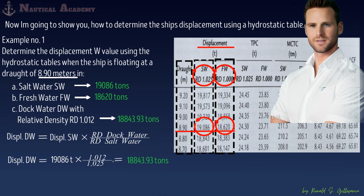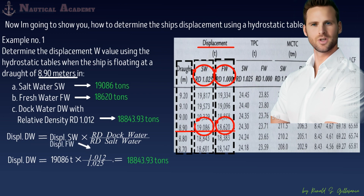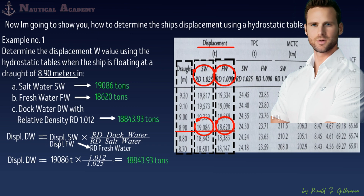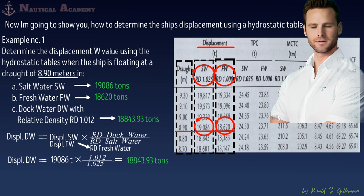Take note that if you use freshwater displacement instead of salt water displacement, your denominator should also be replaced with the relative density of freshwater. Those are all my explanations regarding the first example on how to extract the value of ship's displacement using a hydrostatic table. I hope you got it. I will now proceed to my next example.